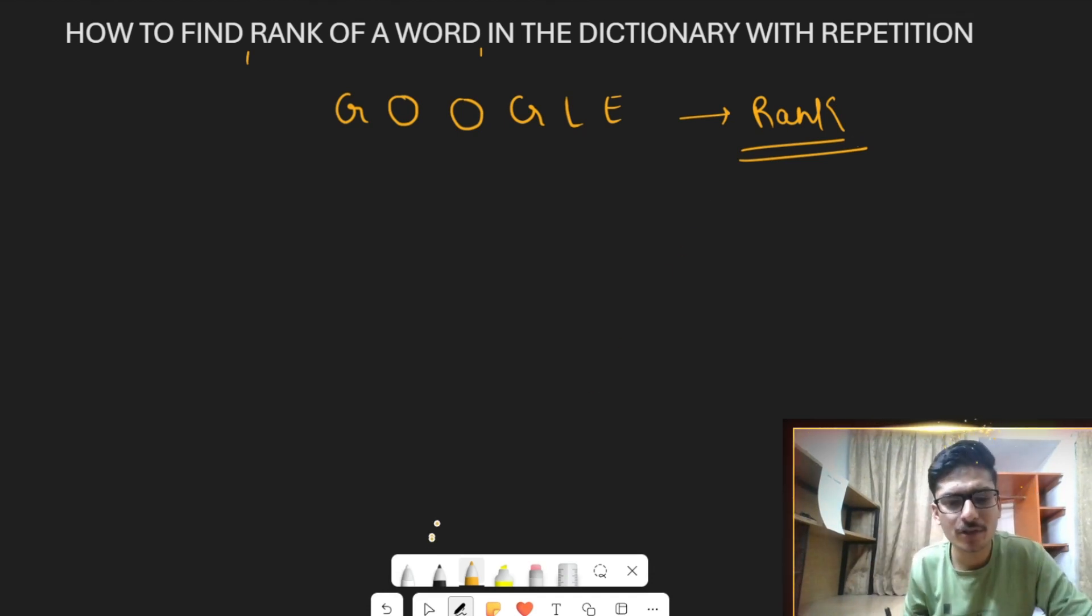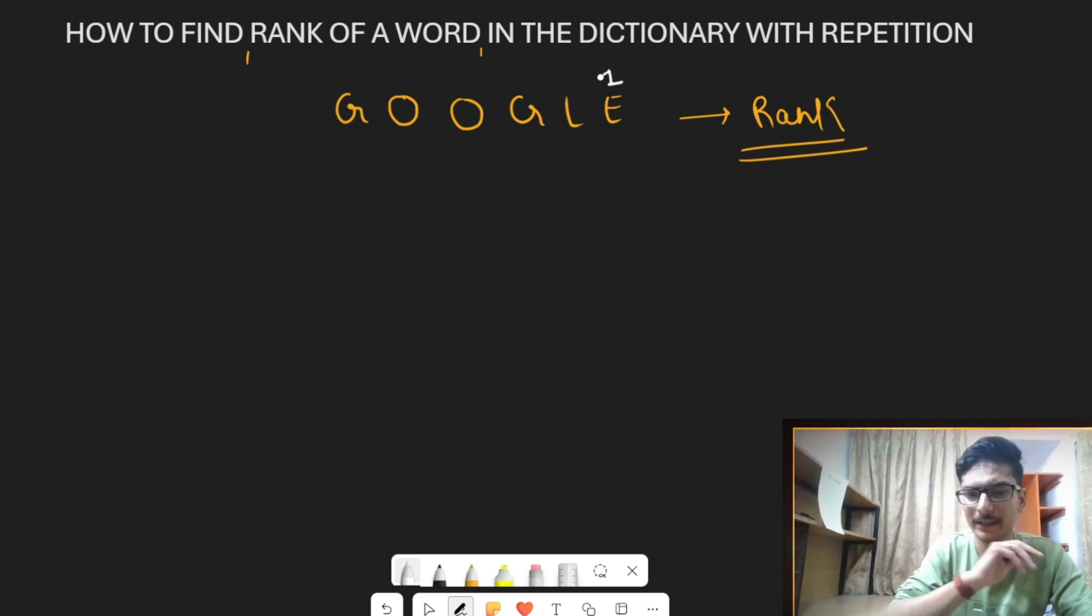So the first step is the numbering of letters in alphabetical order. So first I have seen the number in alphabetical order. The letter E is 1 in the English alphabet. G is 2. L is 3, and O is 4. Then you have O again, which is 4.